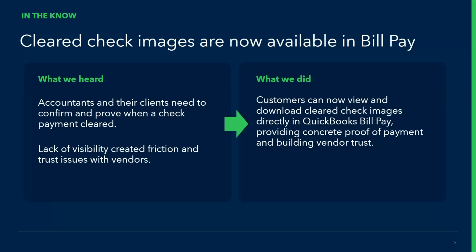The project lead comes around a couple days later and they're like, what happened to that check? And they reach back out to your client, and your client says, well, all I can see in my status is that it was sent. So now customers can view and download those cleared check images directly in QuickBooks Bill Pay, which helps provide that concrete proof of payment. This can be used for your own status reviews or to provide to the vendor to confirm the check was deposited into their account.